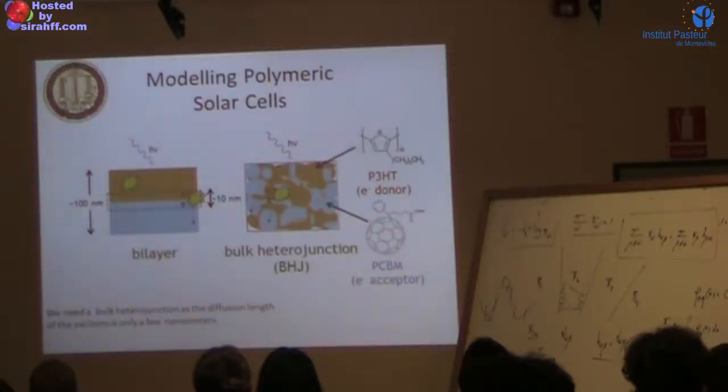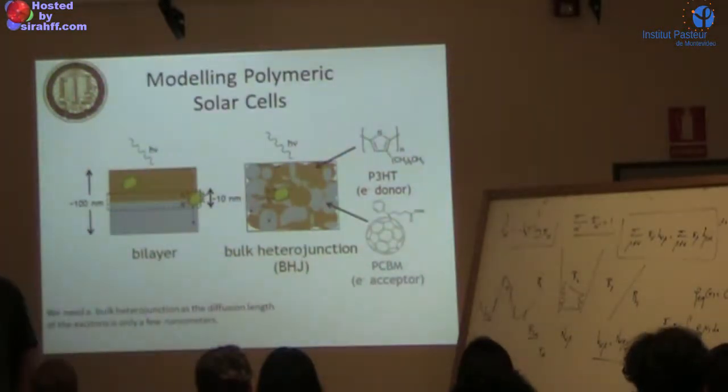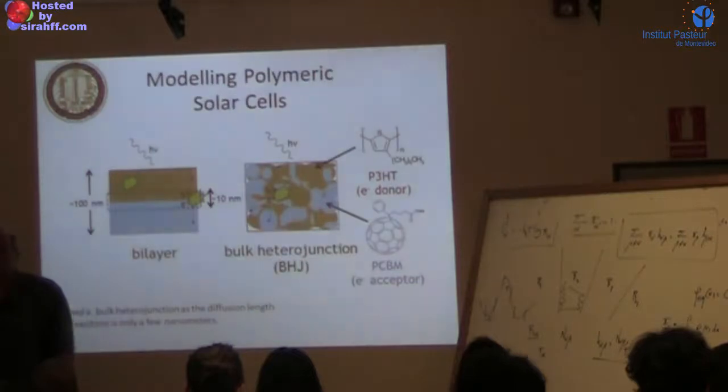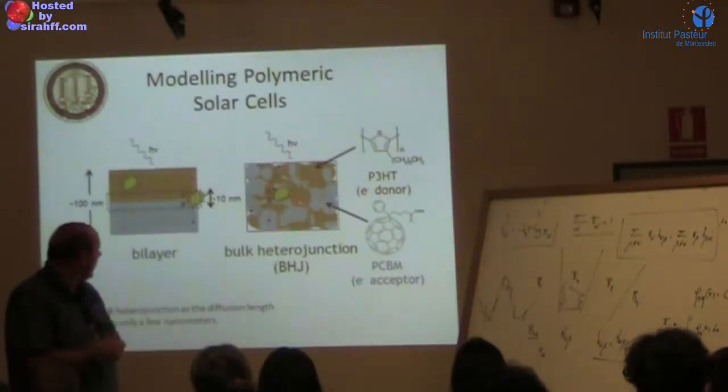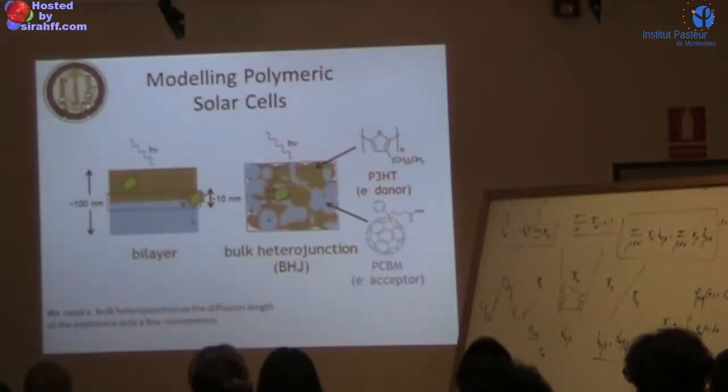The problem is the exciton diffusion length is about 10 nanometers. You need about 100 nanometer thickness to get reasonable absorption. So if you have only 10 nanometer thick layers, you don't absorb enough. People came up with what's called a bulk heterojunction - a self-assembled system which is a bicontinuous phase of P3HT and fullerene, where ideally no point is more than 10 nanometers from an interface. That is the system.